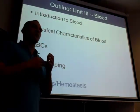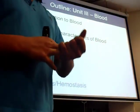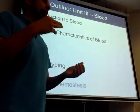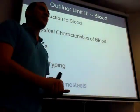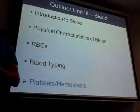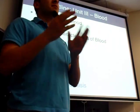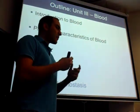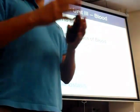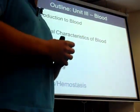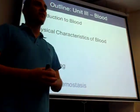How many think the complete universal recipient is type A? Type B? Type AB? Good, type AB. So type AB is the complete universal recipient, and now if we include RH, is it AB positive or negative? Positive. So it's a complete universal recipient because it has all of the antigens.